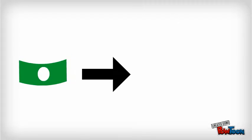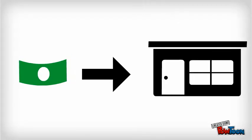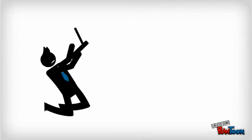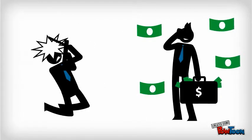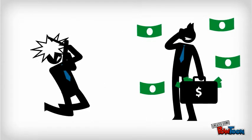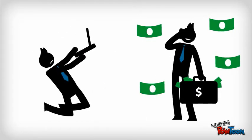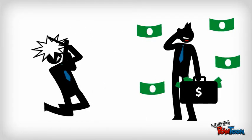You then use the money you receive from a family member or friend to start up your business. The IRS will impute interest and collect taxes from lenders even if lenders don't charge interest.